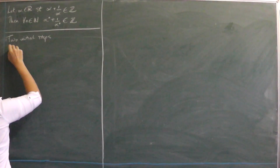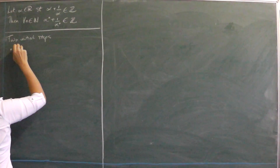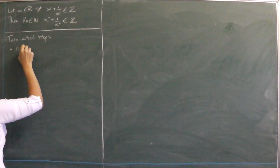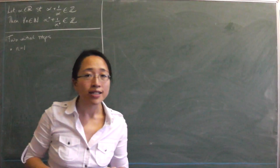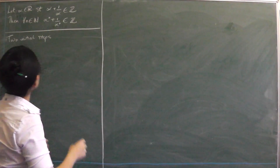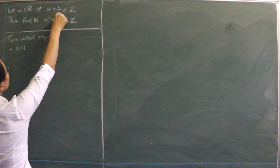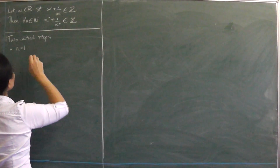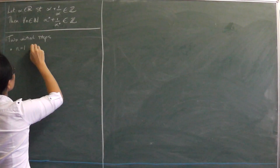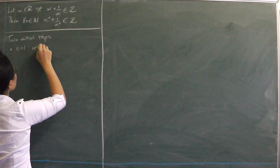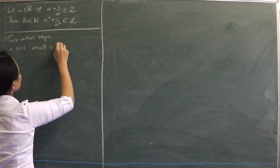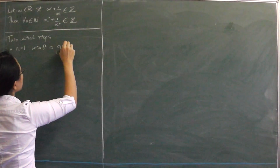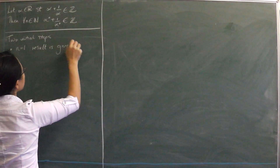First of all, when n equals 1, it's just the given result — and this is true. The result is given.